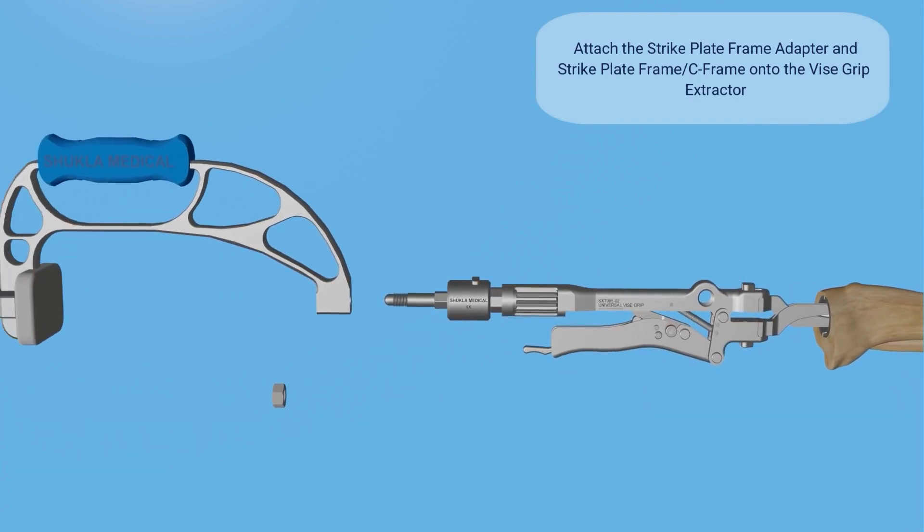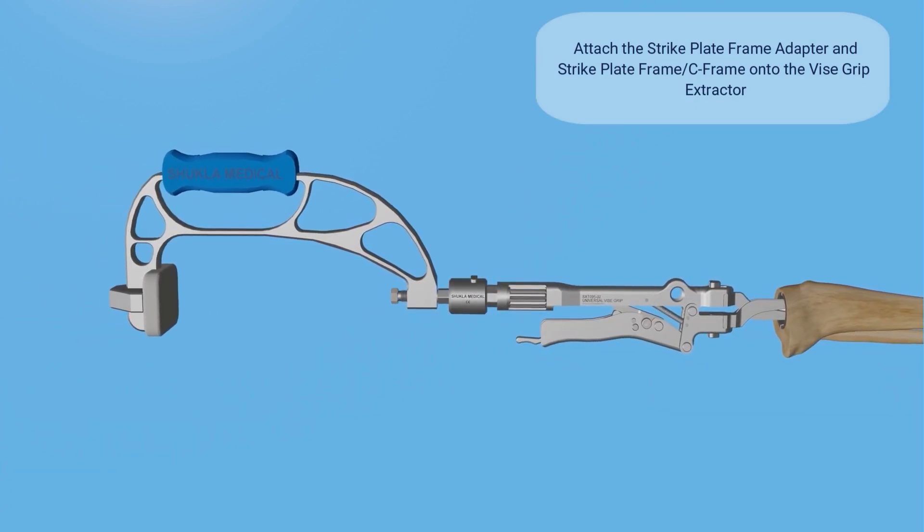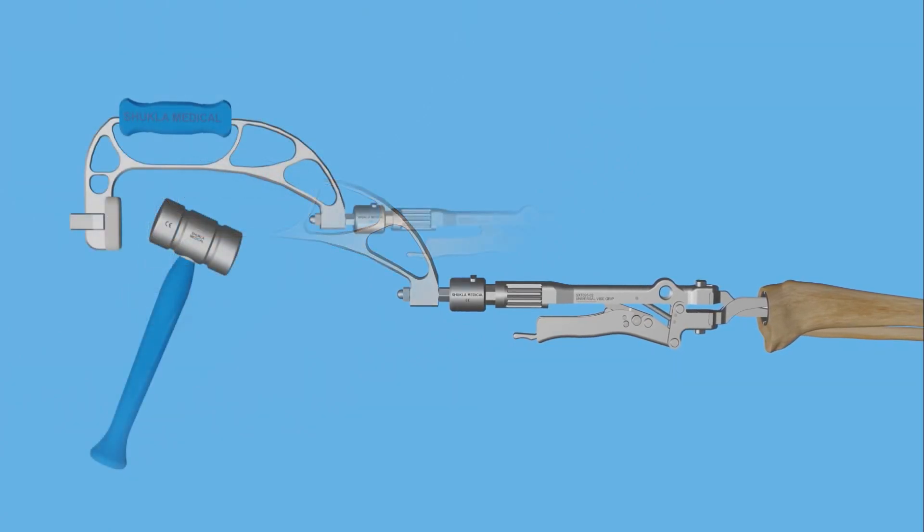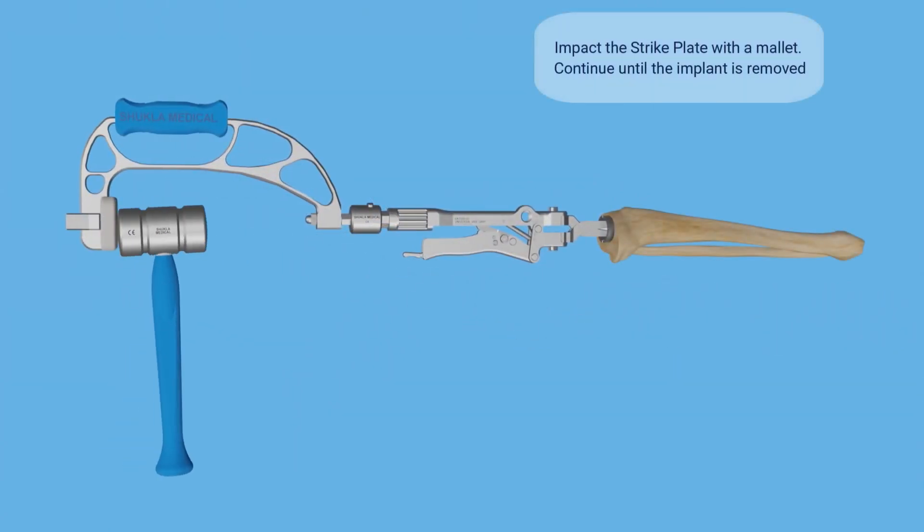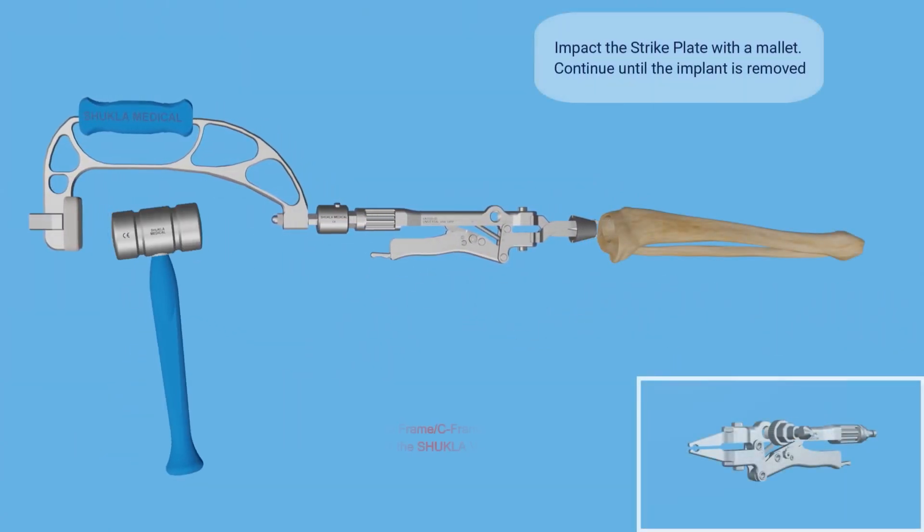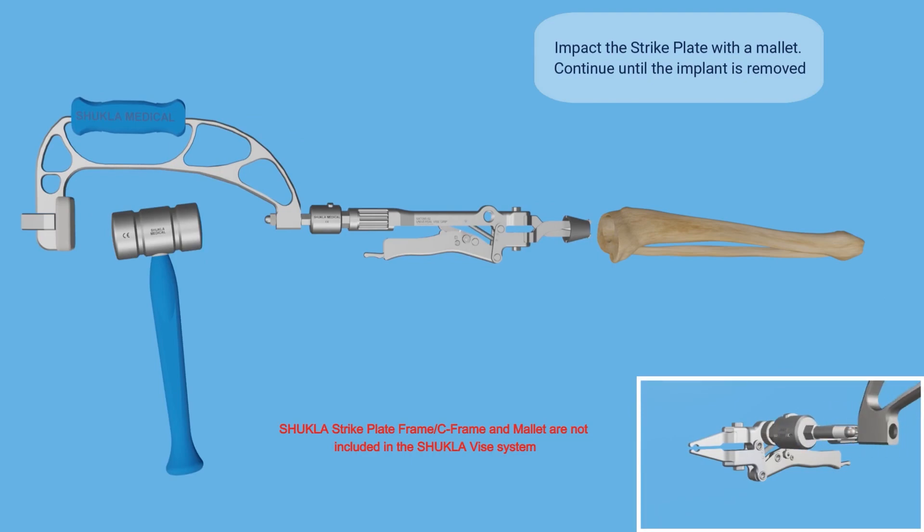The C-frame is assembled in line to the vice grip extractor. A mallet is used to impact the C-frame until the implant is removed.